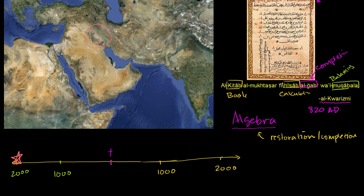That was once again in this part of the world — Babylon was right about there. Babylon kept the tradition of Sumeria; this whole region was called Mesopotamia, Greek for 'between two rivers.' That's the first traces of people we know of who were starting to do what we would call real algebra. Those were major contributions to algebra from Babylon around 2,000 years ago.